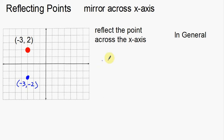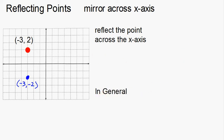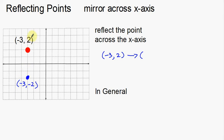So now let's look at some notation, and then we're going to look at this in general. If I want to reflect the points across the x-axis, we start with our original point of negative three, two. Notice that the x-coordinate stays the same — negative three stays negative three. But notice what happened to the y-coordinate: two became negative two.